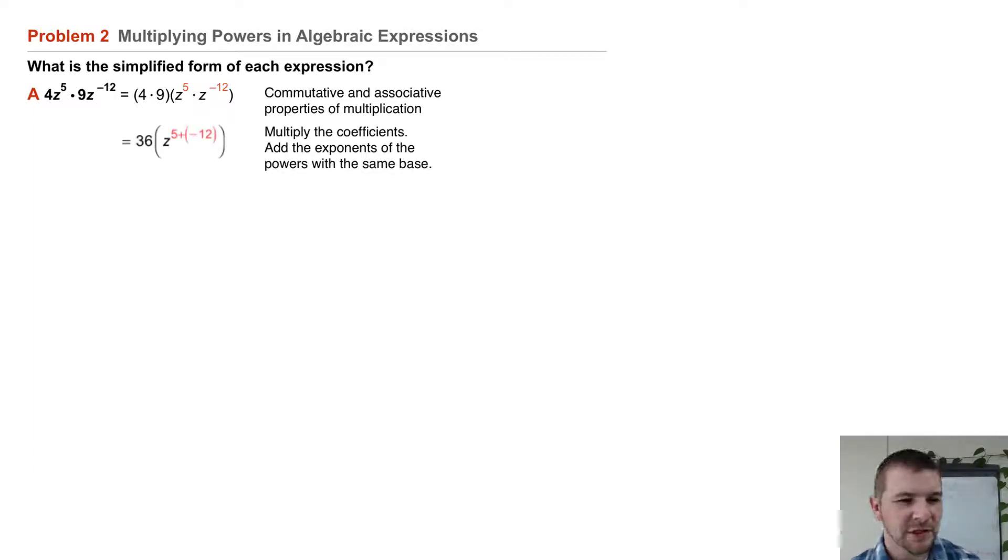We can multiply the coefficients first, 4 times 9 and get 36. And then we can multiply the z to the fifth times z to the negative 12 and find this equals 36 times z to the negative seventh power.